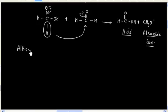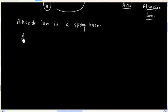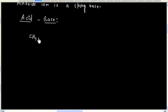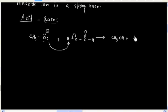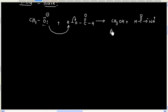Now, the alkoxide ion is a strong base, so in the next step we will have an acid-base reaction. The alkoxide ion will extract a proton, and finally we will have alcohol and the salt of the acid as the products.